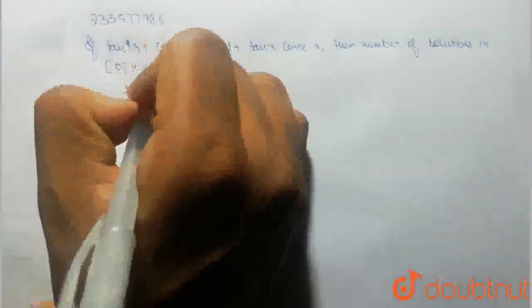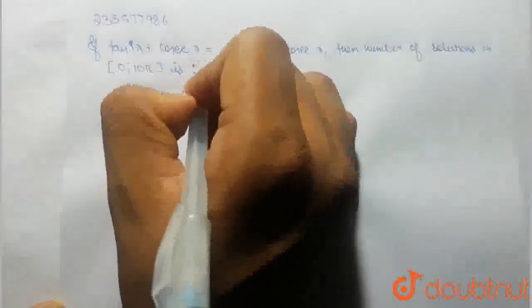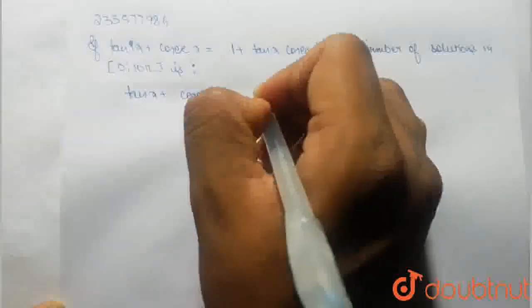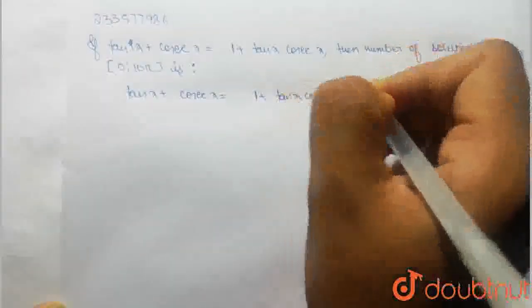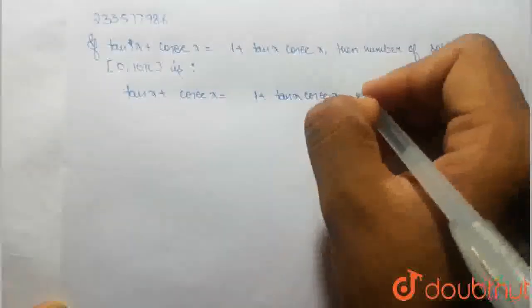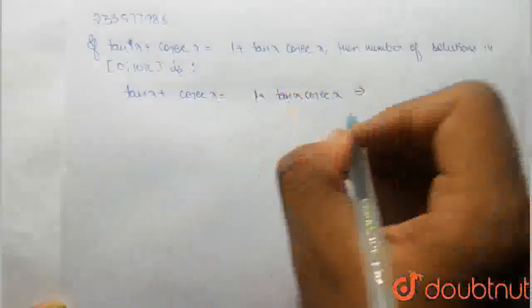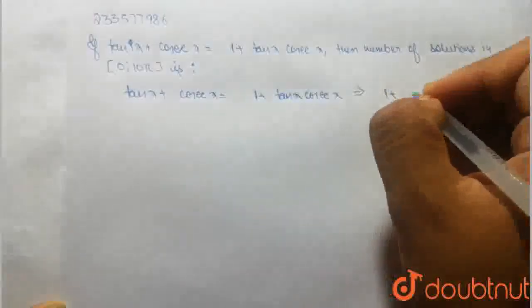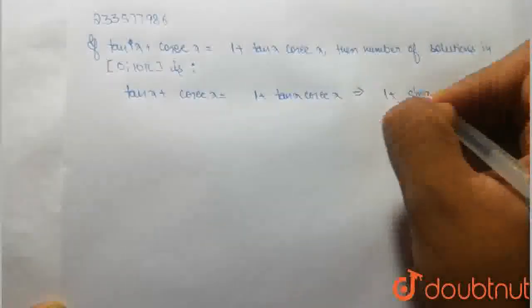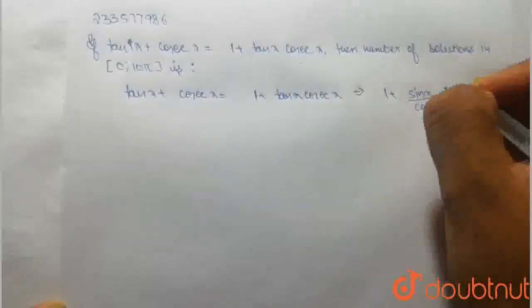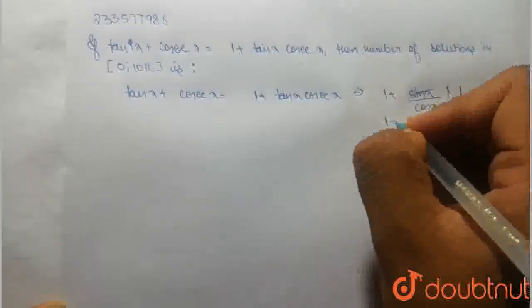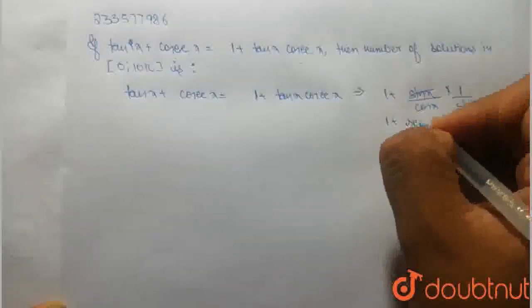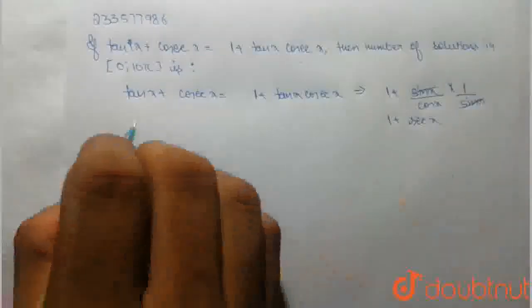Let's see the equation. We have tan x plus cosec x is equal to 1 plus tan x into cosec x. Now we can convert it as sin and cos. We can get it on the right hand side. 1 plus tan x, sin x divided by cos x, and cosec x is equal to 1 upon sin x. Then we have 1 plus sec x. Right hand side is 1 plus sec x.